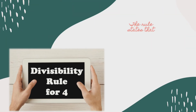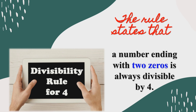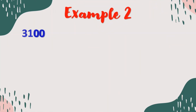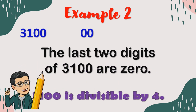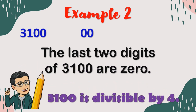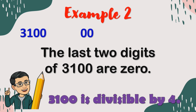The other rule states that a number ending with two zeros is always divisible by 4. For example, we have 3,100. The last two digits are 0. Therefore, we can now say that 3,100 is divisible by 4.